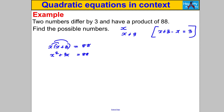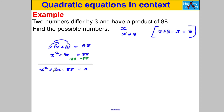I can't solve a quadratic until one side equals 0, so I subtract 88 from both sides to get X² + 3X − 88 = 0. Can you think of two numbers that multiply to negative 88 and add to positive 3? I can: (X + 11)(X − 8) = 0.